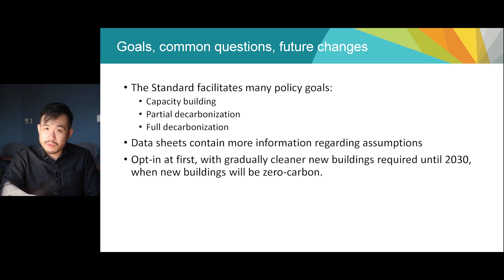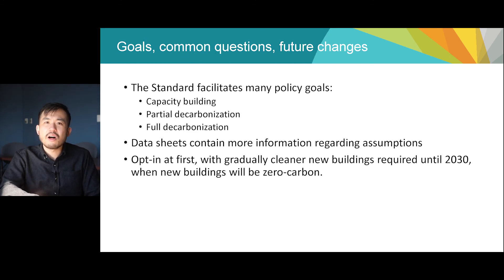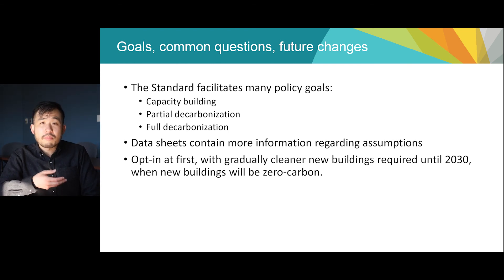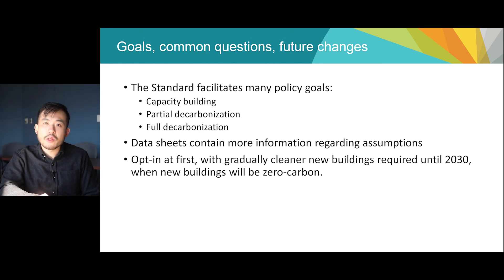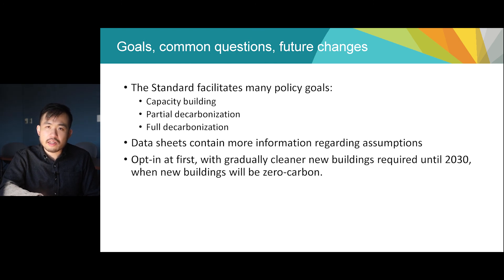I realize that may be a significant amount of information — you don't need to memorize it all in order to be familiar with the code proposal. We hope you come away understanding that the Building Carbon Pollution Standard facilitates a lot of different policy goals for communities, for builders, and for the general public. For communities that want to build capacity, the measure-only level will provide that opportunity. For communities interested in partially or fully decarbonizing their new buildings, this path provides that option too. While this Building Carbon Pollution Standard is designed for local opt-in at first, the province's most recent climate plan envisions gradually requiring new buildings to emit less carbon until 2030, when all new construction is expected to be zero carbon. As with Energy Step Code, we will be in close communication with leading local governments to refine the standard over time and build capacity in all areas of BC to meet this commitment.